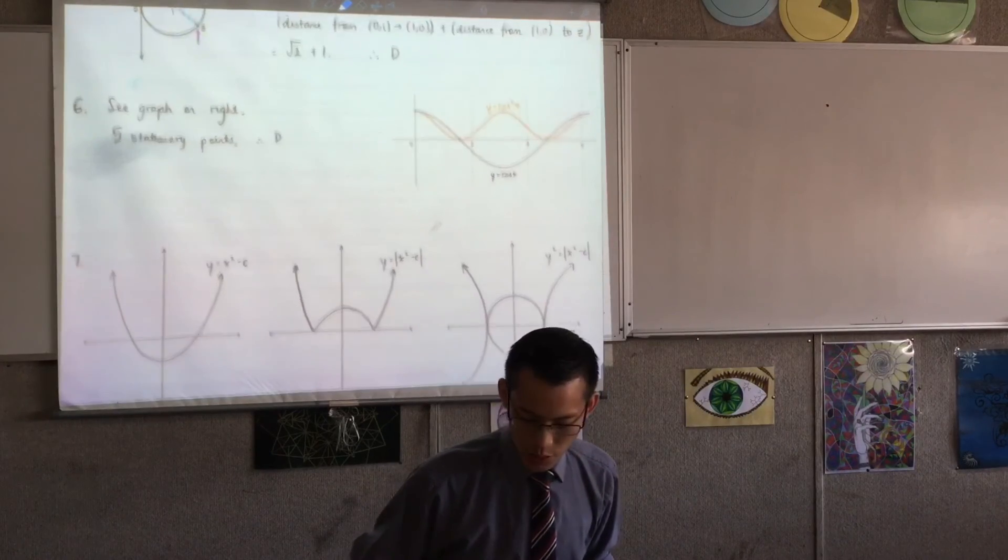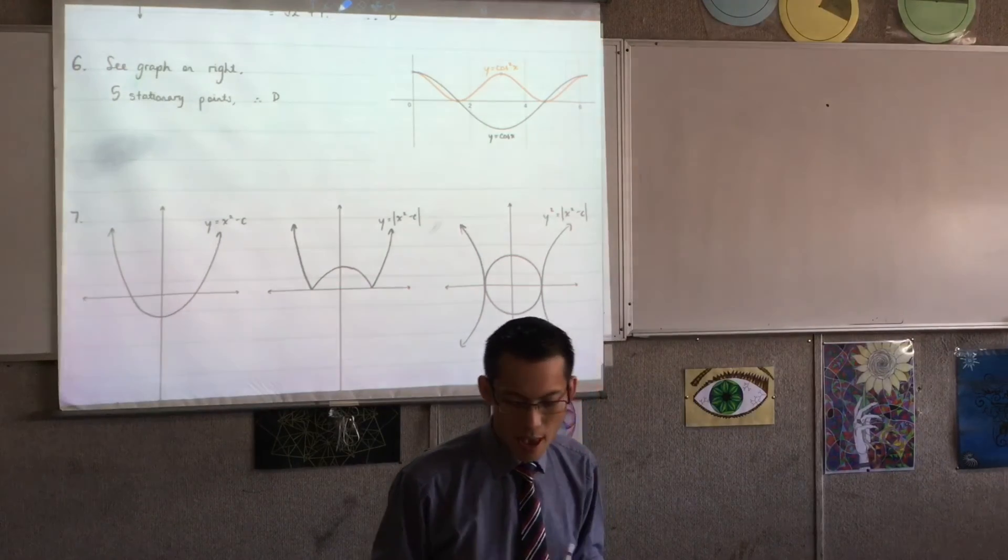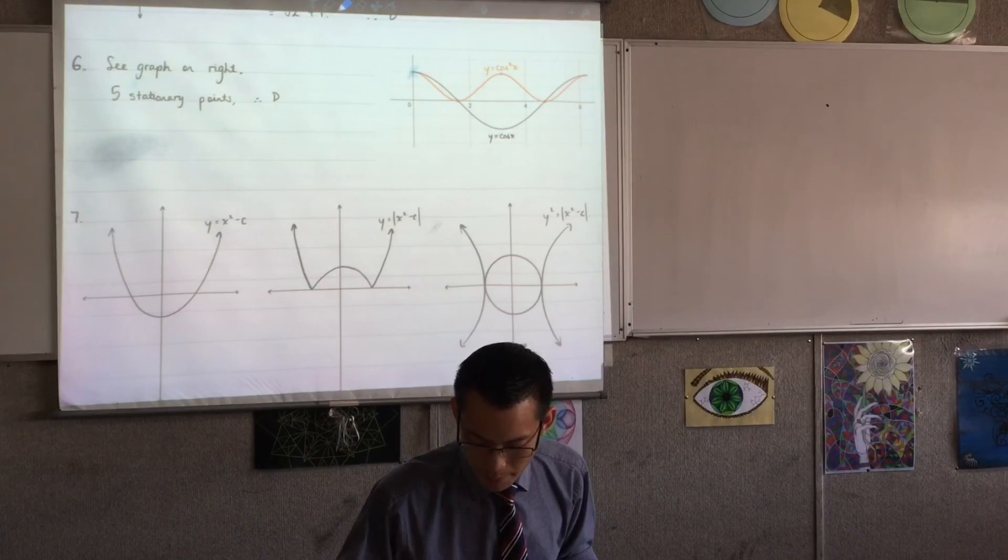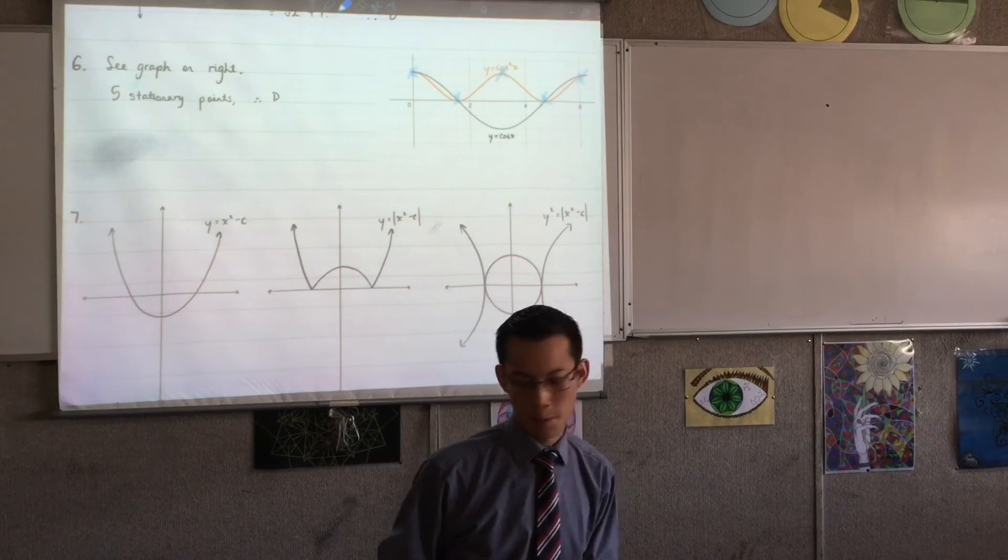Question six, no need to dwell. When you square a function, you can see how it behaves with its stationary points and so on, and you can count them. One, two, three, four, five, three times.